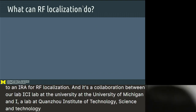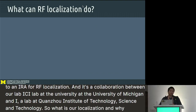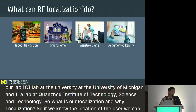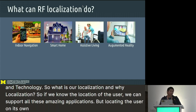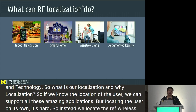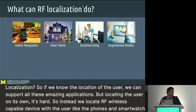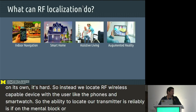So what is ARC localization, and why localization? If we know the location of the user, we can support many amazing applications. But locating the user on its own is hard, so instead we locate the RF wireless-capable device with the user, like their phones and smartwatches. The ability to locate RF transmitters reliably is a fundamental building block for these ubiquitous systems.